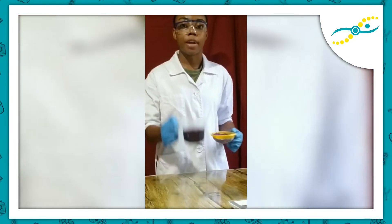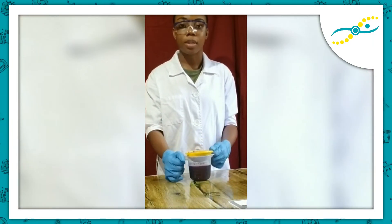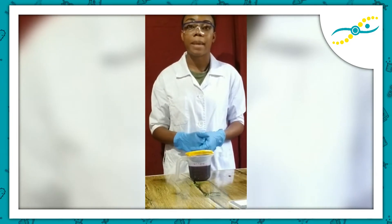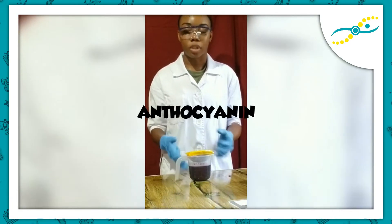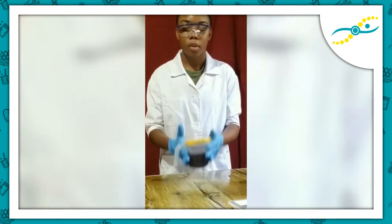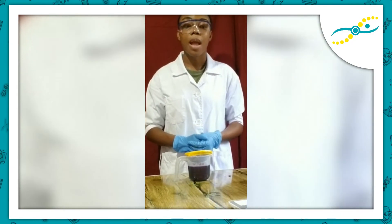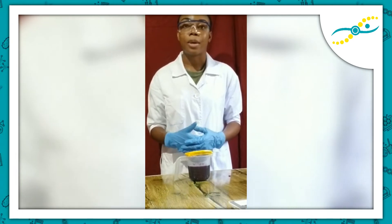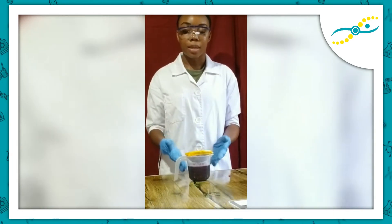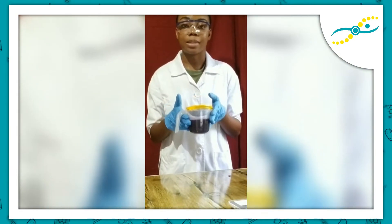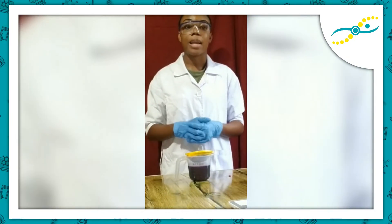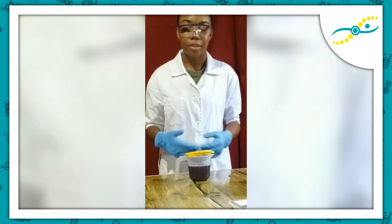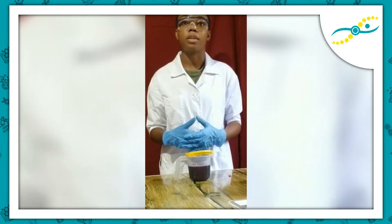From this cabbage juice we are going to form our indicator. The mechanism behind this is that red cabbage contains a pigment known as anthocyanin, which gives the cabbage its purple color. This pigment is water soluble and able to detect whether a solution is acidic or basic. In acidic environments the solution will turn red, while at a pH greater than 7 it will turn a bluish-green color.